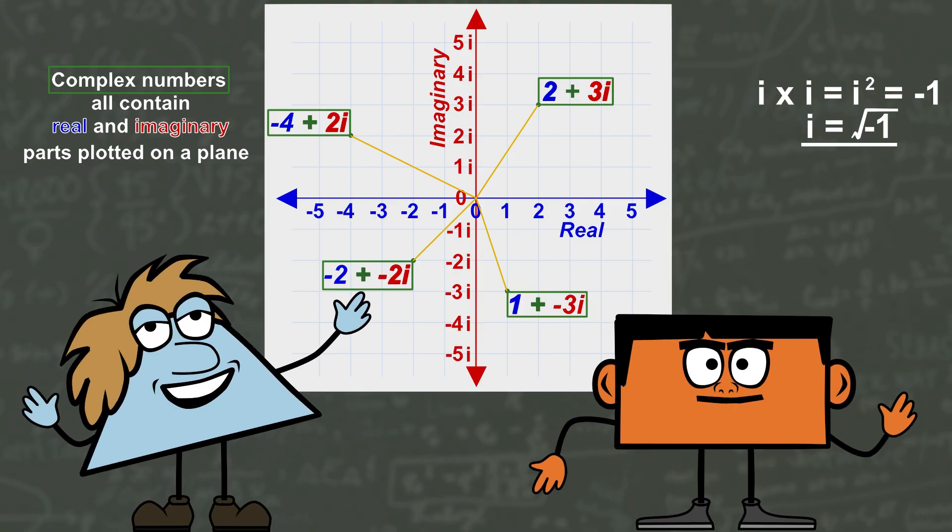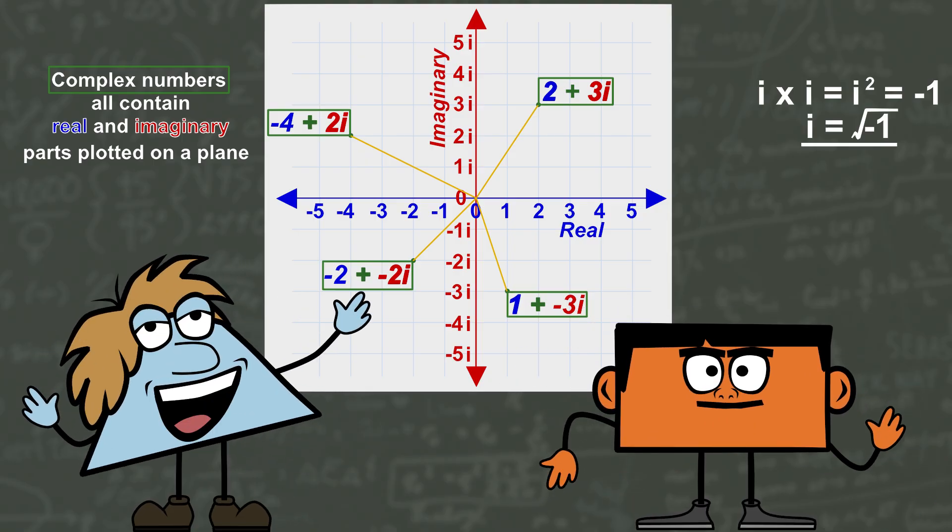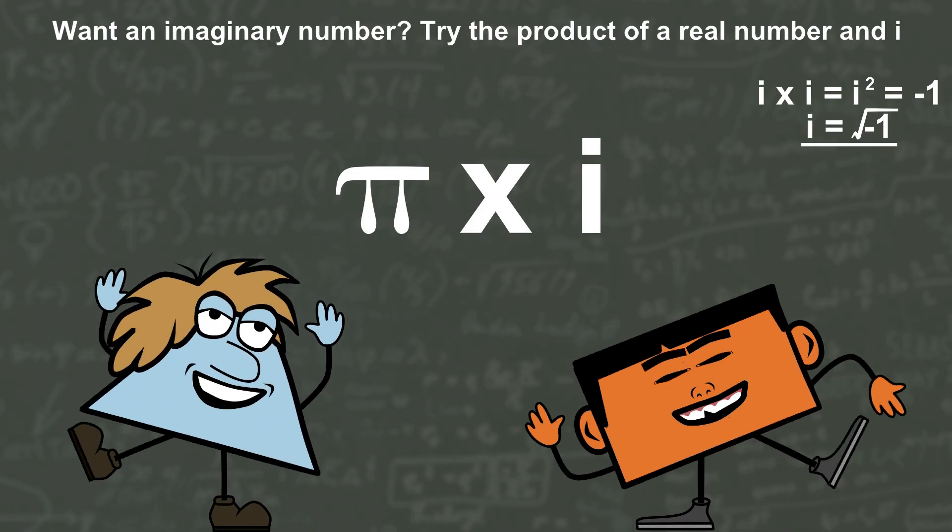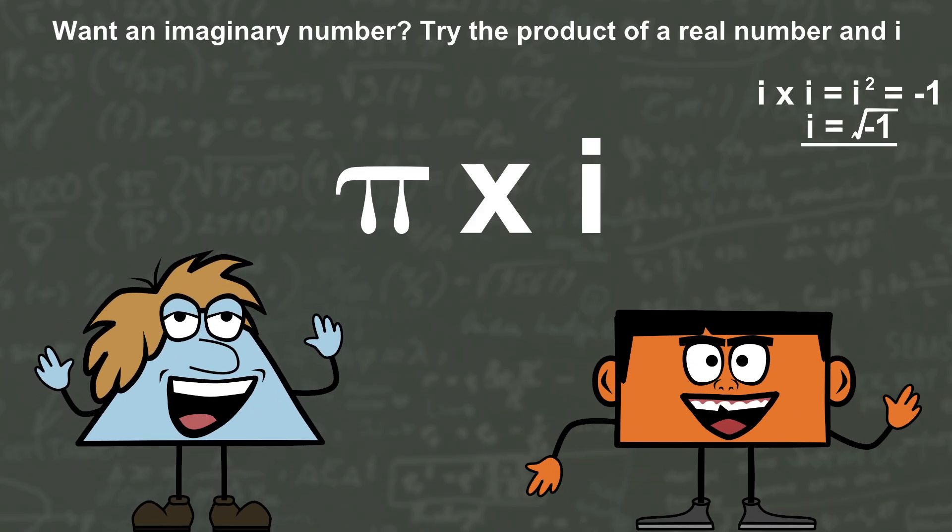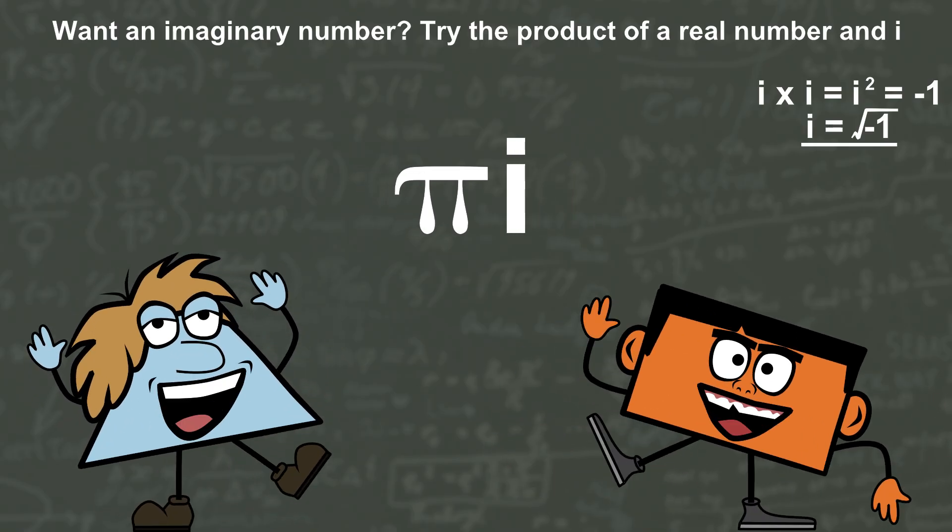Complex numbers all contain real and imaginary parts plotted on a plane. Want an imaginary number? Try the product of a real number and i.